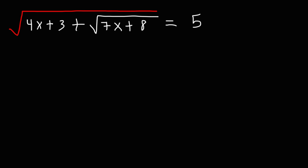So the first thing we need to do in order to solve this equation is take the square of both sides. This will get rid of the radical on the outside. So we're going to have left over 4x plus 3 plus the square root of 7x plus 8. That's going to equal 5 squared, or 5 times 5, which is 25.